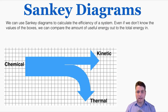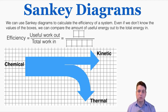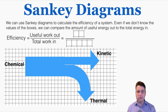As a final note, we can use Sankey diagrams to calculate the efficiency of a system even if we don't know the exact values of the boxes — we can compare the amount of useful energy out to the total energy in. To find the efficiency, since efficiency is useful work out over total work in, there are two boxes of kinetic energy coming out and five boxes of chemical energy going in. So the efficiency is the ratio two to five. It's not necessarily true that there are exactly two joules and five joules, but the ratio is definitely two to five. So the efficiency is two-fifths, or 0.4, or 40%.